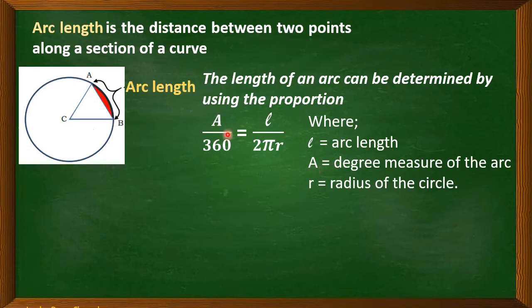And A, this one, refers to the degree measure of the arc, while R is the radius of the circle. Of course, we all know that pi has an approximate value of 3.1416.